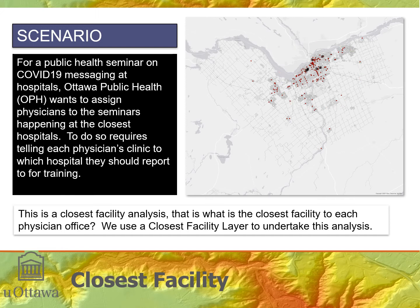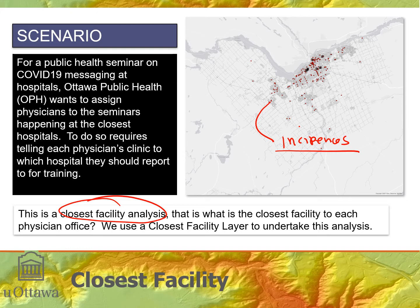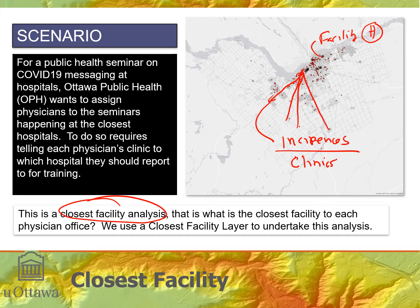This is called a closest facility analysis because we're taking what are called incidences — an incident is something in space that we want to find the closest facility for. Here, the facilities are hospitals and the incidences are the physician offices. Each physician office needs to be assigned to its closest hospital in driving time, not in geographic distance — we need to assign it to the closest hospital in terms of time.